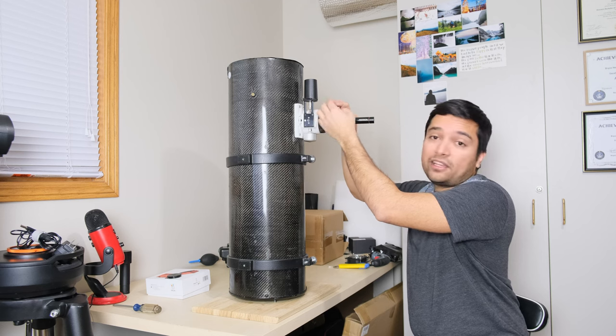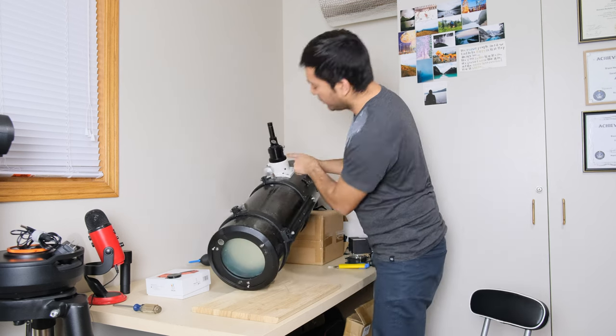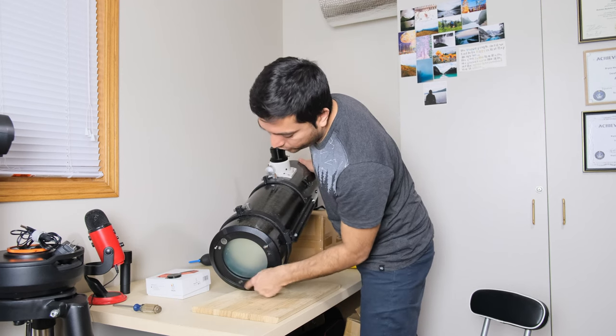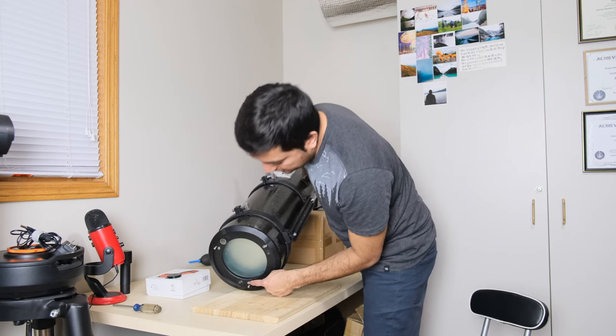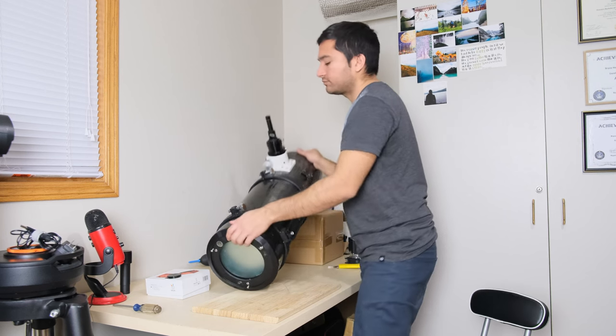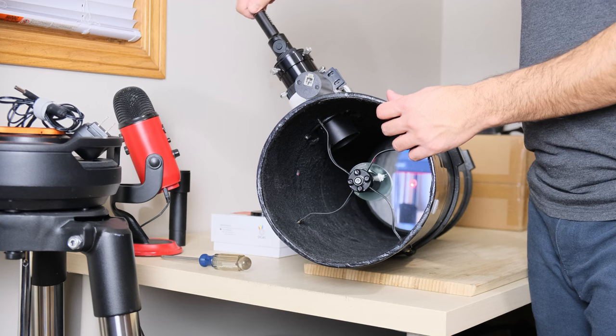Lock it in place securely. You can see the opening on the collimator facing back here. At the back you can see these three taller locking screws and the shorter collimating screws.